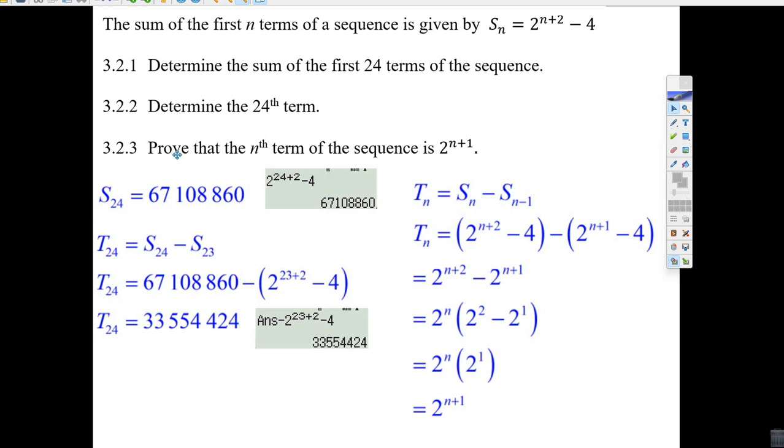Now it's a little bit weird here, this thing. They say prove that the nth term of the sequence is 2 to the n plus 1. Well, if you want to find any term, you take the sum of n, and you minus the sum of one term less. That's what we did. The sum of n minus the sum of n minus one.